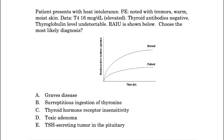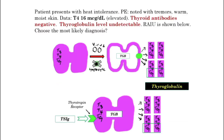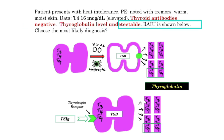This question is not going away. You're going to see it on Step 1, Step 2, and Step 3, where they're going to be using thyroglobulin levels being undetectable in a patient with hyperthyroidism.